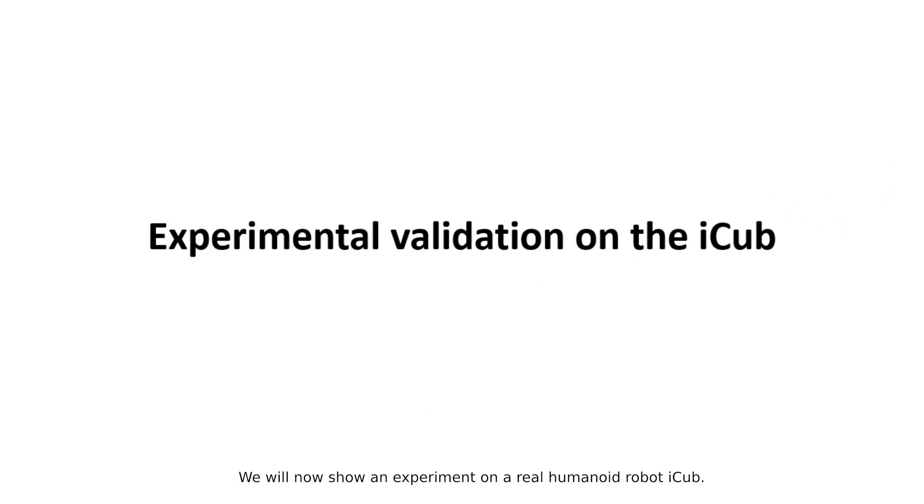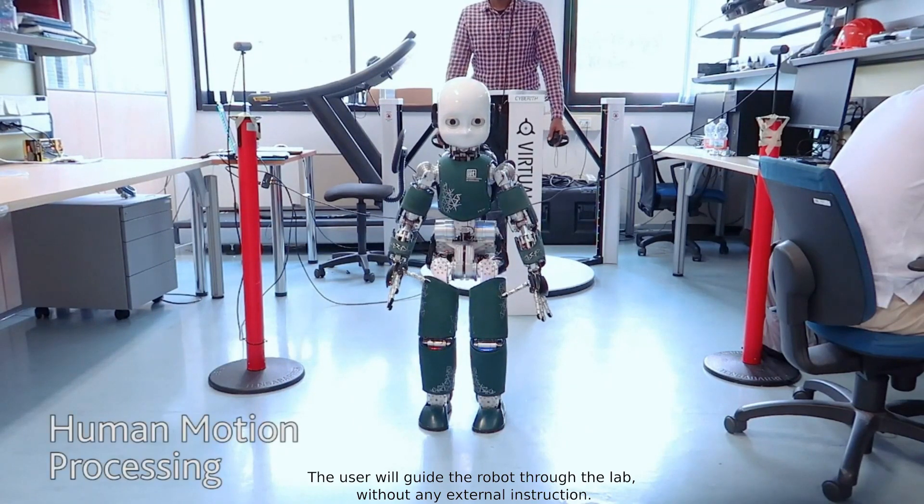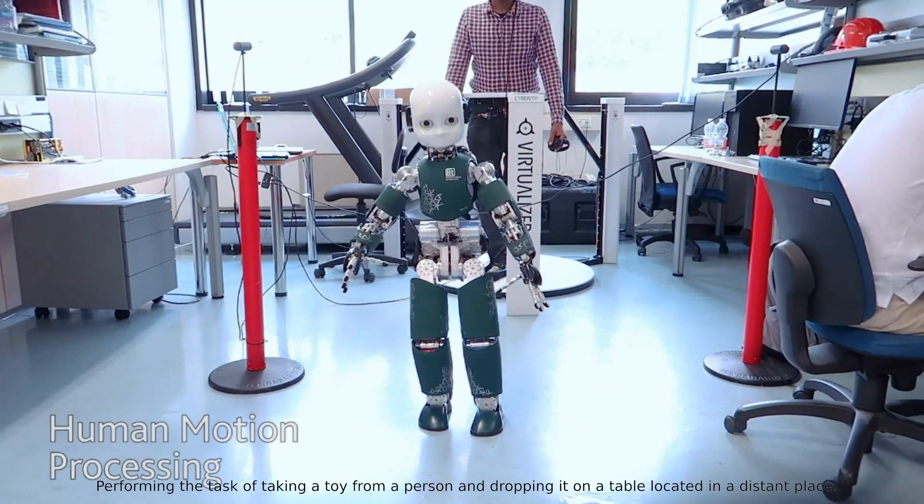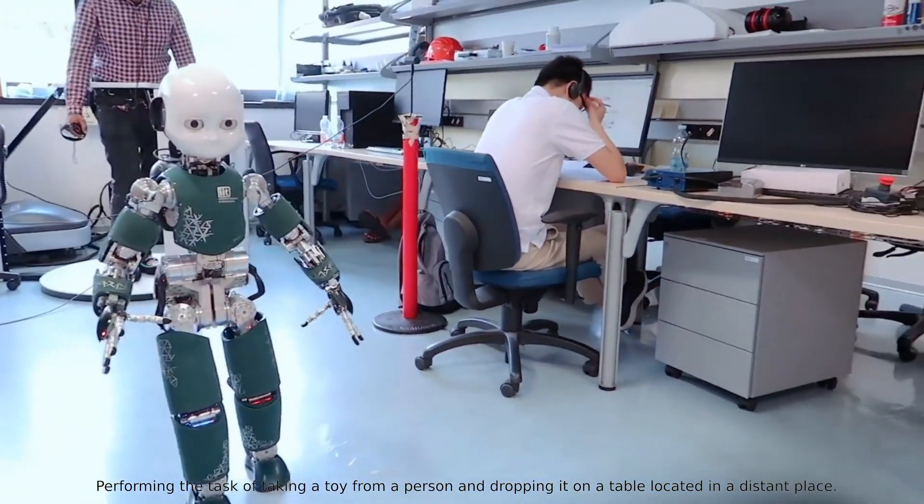We will now show an experiment on a real humanoid robot iCub. The user will guide the robot through the lab without any external instruction, performing the task of taking a toy from a person and dropping it on a table located in a distant place.